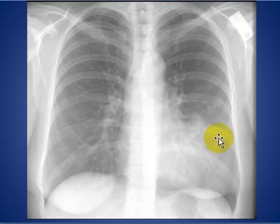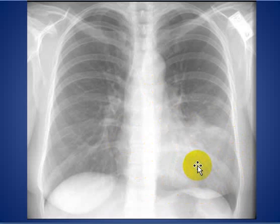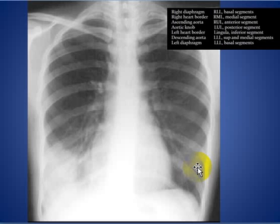In another example, you can see the heart silhouette and there is an opacity obliterating the left cardiac border on the lower margin. According to the silhouette sign, that opacity should be located anteriorly and should be in the lingula, inferior segment.